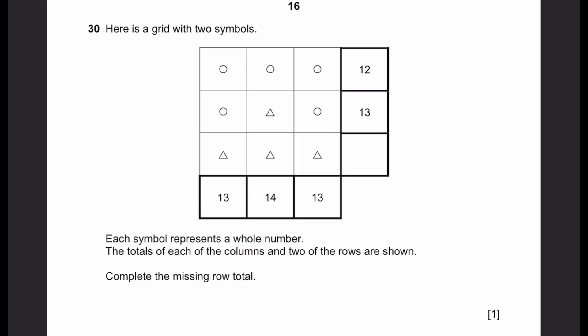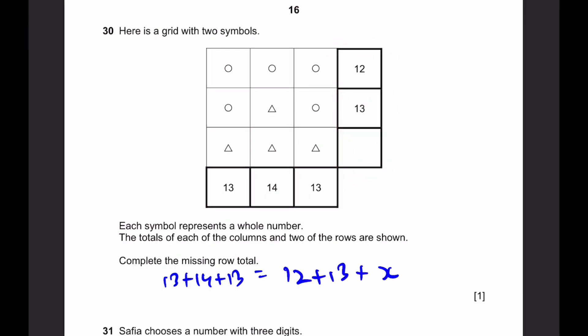Question 30. Here's a grid with two symbols. Each symbol represents a whole number. The total of each column and two of the rows are shown. Complete the missing row total. So I'll show you a neat trick to do this question, or any kind of question like this, which usually comes in contest math, and without even calculating the value of the circle or triangle. So if we add all three columns, that's the same thing as adding all three rows, right? So adding all three columns is the same thing as adding these values here: 13 plus 14 plus 13. That's going to be equal to the same thing as adding these row totals here: 12 plus 13 plus another value x. And this x value is this value unknown. So that means x is equal to, when we do 13 plus 14 plus 13, subtract 13 and subtract 12, we get 15. So this is the value.